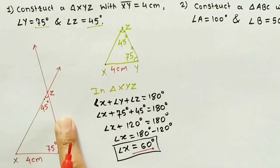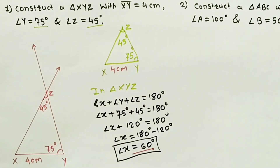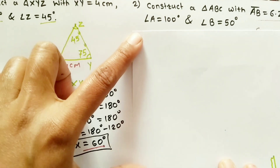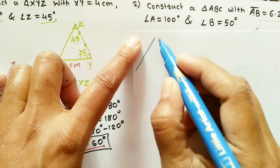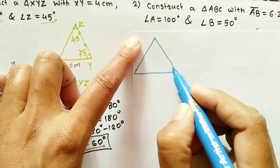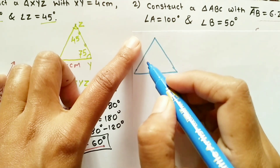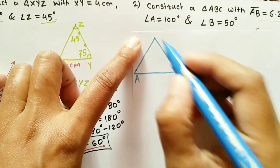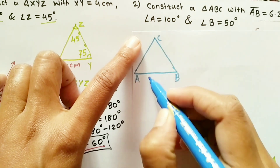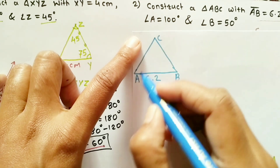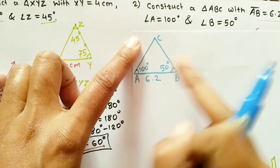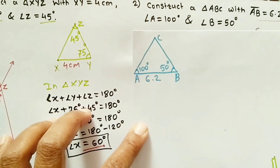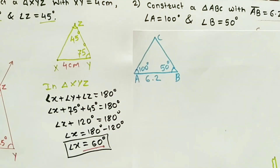The next question says: construct a triangle ABC with AB equal to 6.2 cm, angle A of 100 degrees, and angle B of 50 degrees. Here, you first need to draw a line segment of 6.2 cm.